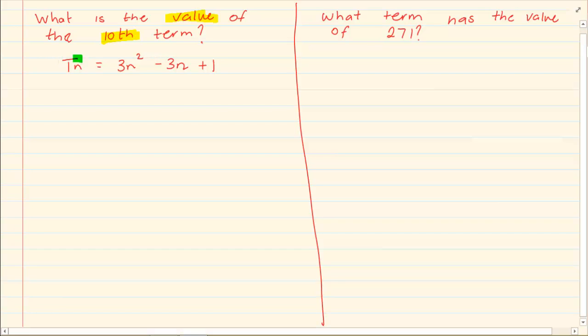So you have that tn is equal to 3n squared minus 3n plus 1. What are they giving us? Are they giving us tn? Or are they giving us n? When they are telling you that they are giving you the tenth term, they are giving you the number it is standing in the row. So what they gave you is n. They are telling you that n is equal to 10.